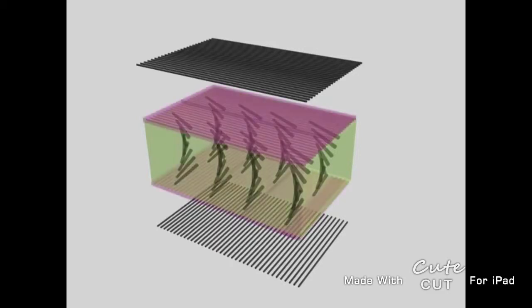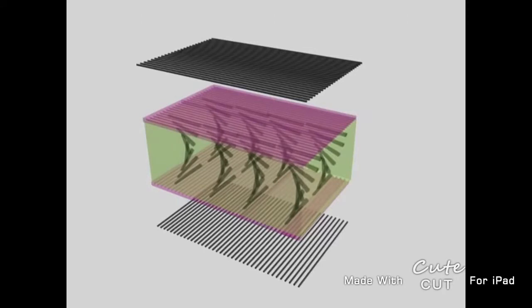The molecules of liquid crystal twist from top to bottom, with twisted molecules spanning 90 degrees. Consequently, the polarization plane is rotated and the light will pass through the lower polarization filter.